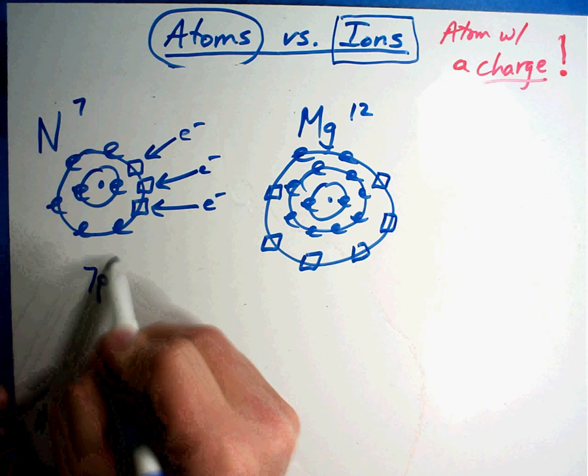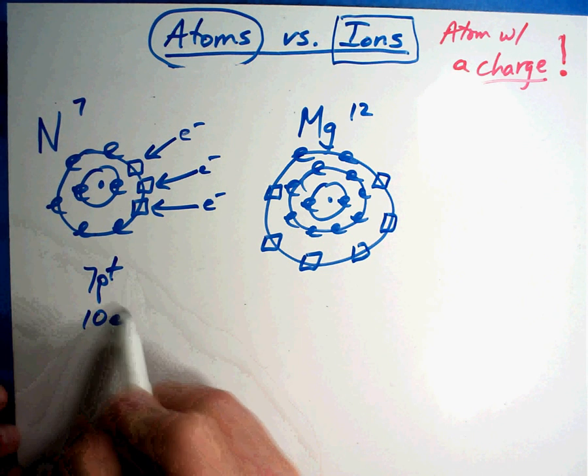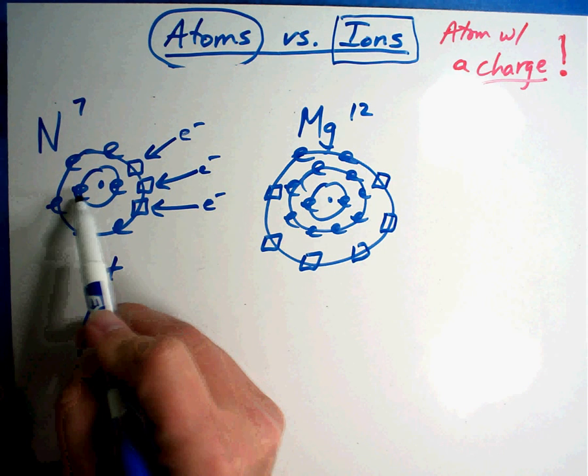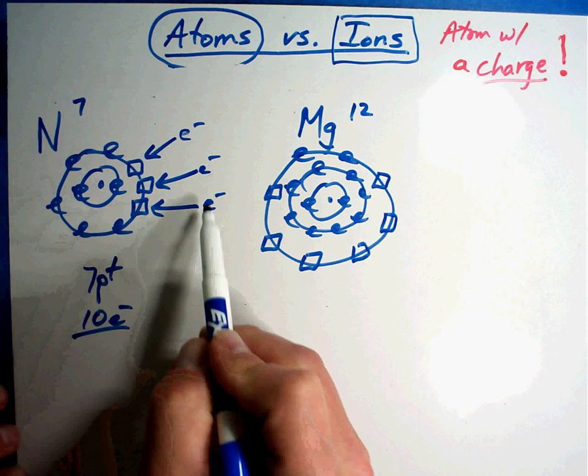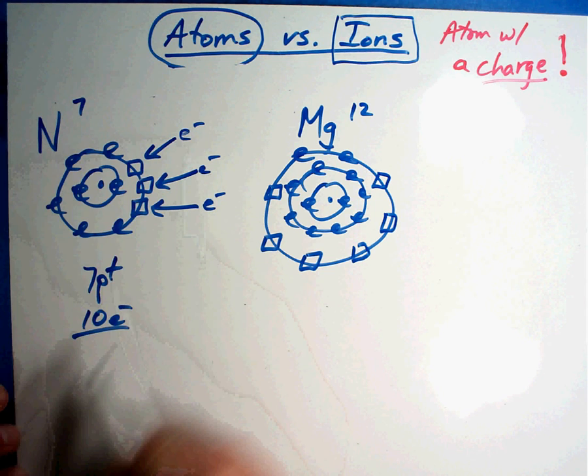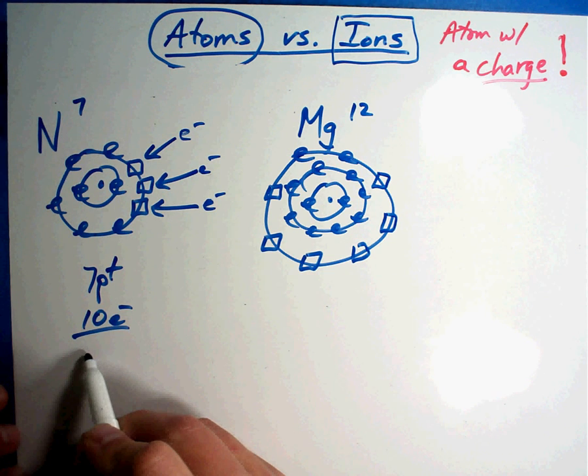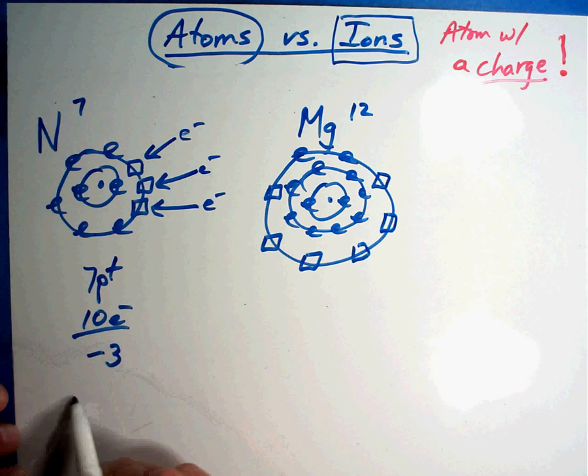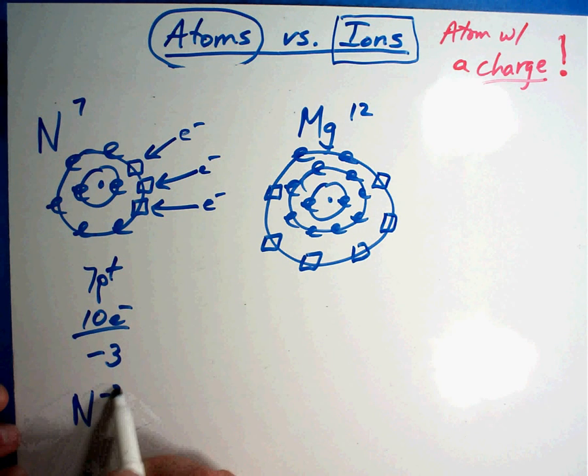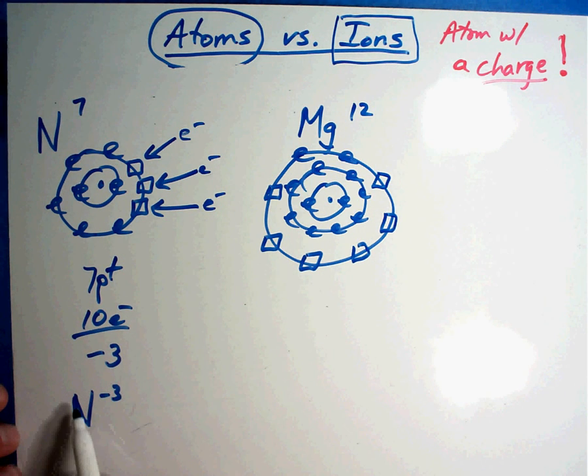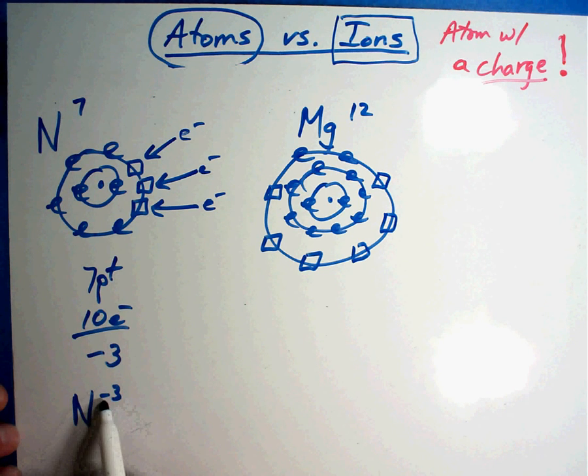Getting three electrons from someone else would be how he's going to fix himself. So he now has seven protons and ten electrons - two here plus eight is ten. He becomes minus three charge. So nitrogen becomes minus three. You'll notice the symbol and up high in a superscript, negative three, gaining three electrons.